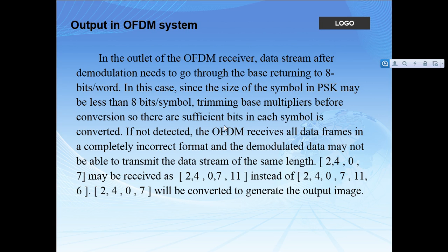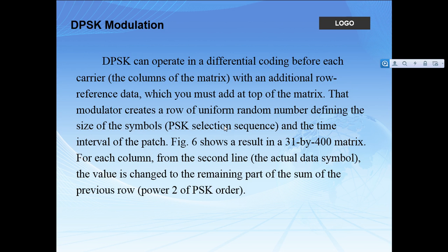At the output of the OFDM receiver, the data stream after demodulation needs to go through a spacing process and then be turned back into 8 bits per word. Since the size of a single PSK symbol may be less than 8 bits, a trimming base multiplier is applied before conversion to handle insufficient bits. A symbol is converted and some padding zeros are added, which I will explain further.